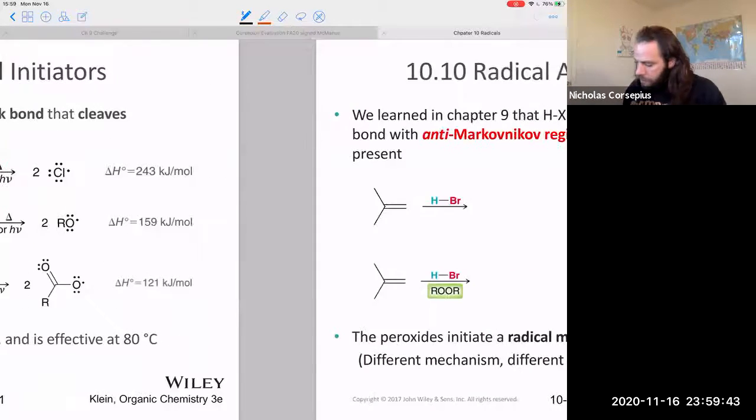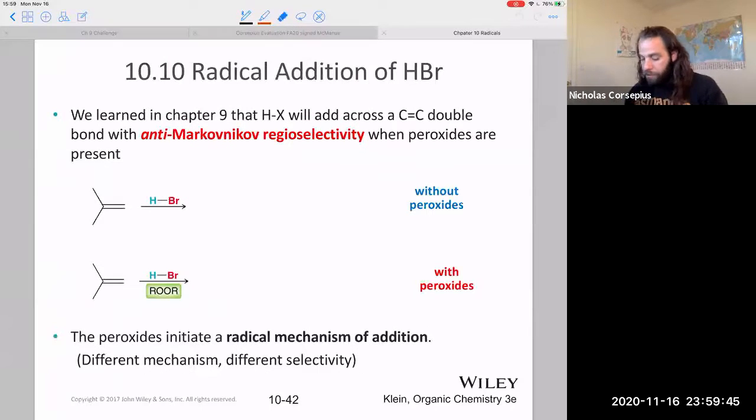Let's start here, actually. Remember, we talked about what happens when you have HBr reacting with an alkene. Well, you have this Markovnikov addition where the bromine ends up on the more highly substituted carbon, but then we said that if you tossed in some peroxide there...